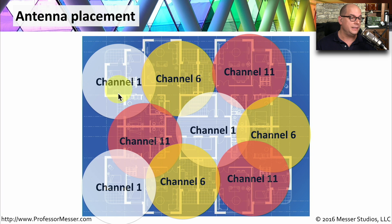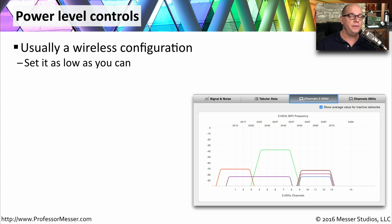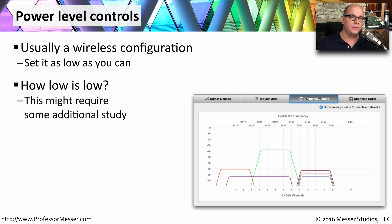Instead, you want to put devices next to each other where there is no frequency overlap, so you're able to communicate as efficiently as possible. Your wireless access point may give you options for assigning signal strength values. You want to set this as low as possible so that you're still able to work properly, but people outside of your immediate area are not able to use that wireless network. Determining exactly what that strength value is may take some testing.